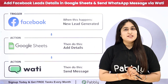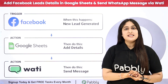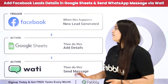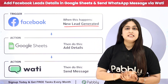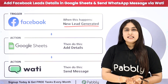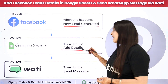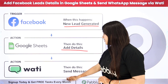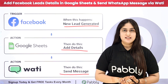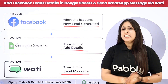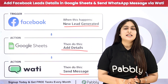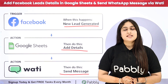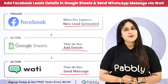I run a digital marketing agency and to promote my agency I am running some Facebook lead ads. Whenever I receive a new lead through my Facebook lead ad, that lead detail should automatically be added in my Google Sheets as a new row, and after that an instant WhatsApp message should be sent to my lead using Vati. To build this connection I need to connect these applications using an automation software named Pabbly Connect. Let me take you to my screen.